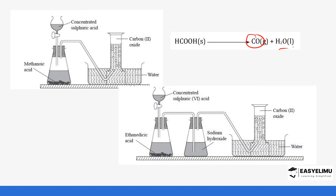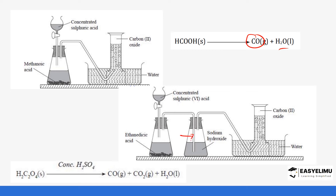When the reaction is repeated with ethan-1,2-dioic acid (oxalic acid), what we form is both carbon monoxide and carbon dioxide. There is an adjustment in the setup: in this case we use a conical flask containing sodium hydroxide because we need to remove the carbon dioxide that is being formed. Our purpose is to collect the carbon monoxide. In both setups you can see the carbon monoxide has been collected over water.